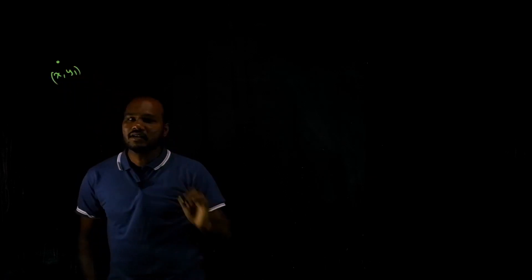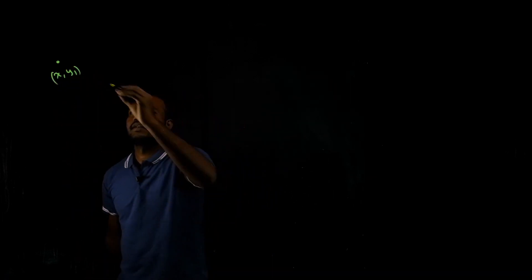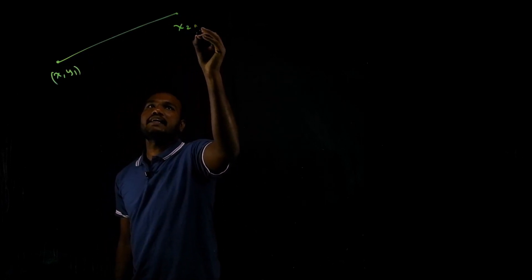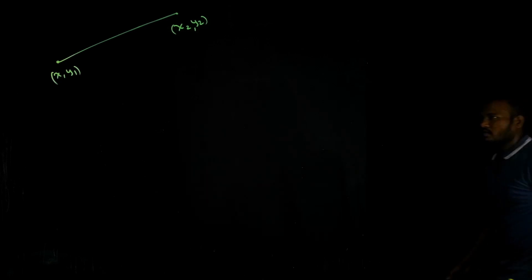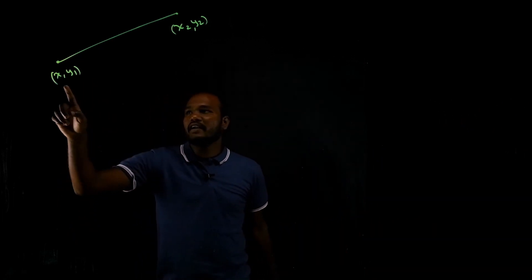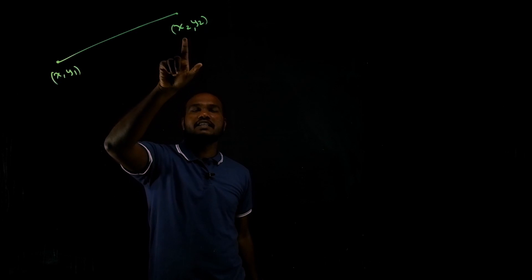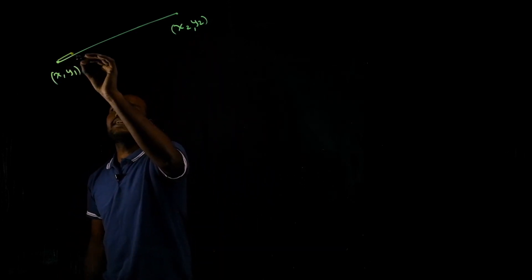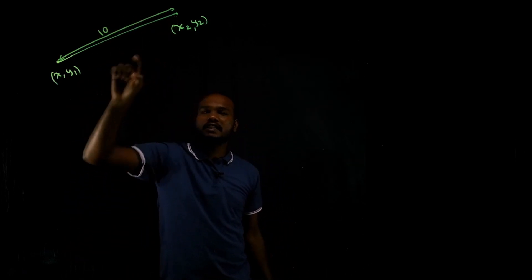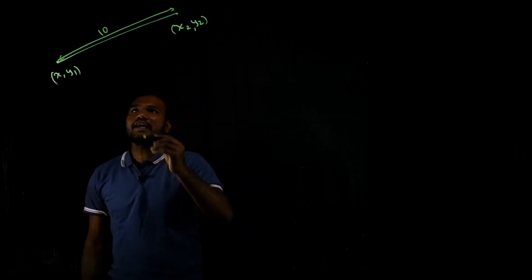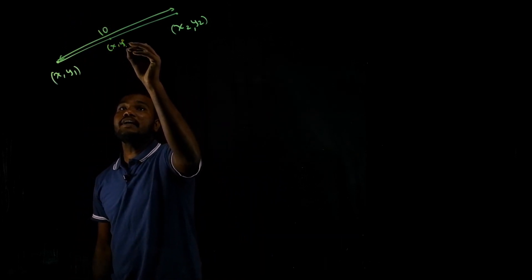Consider a generic point x1 comma y1, and let's take another generic point x2 comma y2. Let's say the distance between them is 10 units. Now I'll introduce a point x comma y in between them, which is at the center.